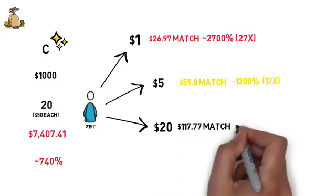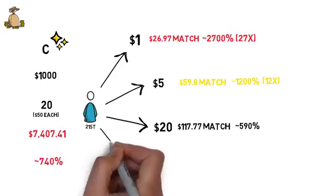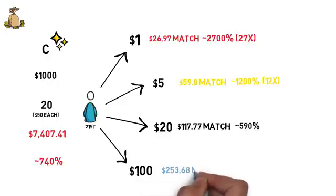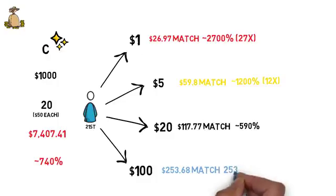$100 would be matched by $253.68, which is 253% of the contributed amount. As we mentioned earlier, this model creates really strong incentives for individuals to contribute even small amounts.